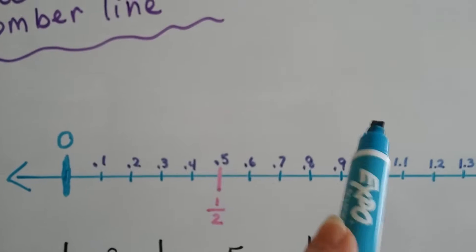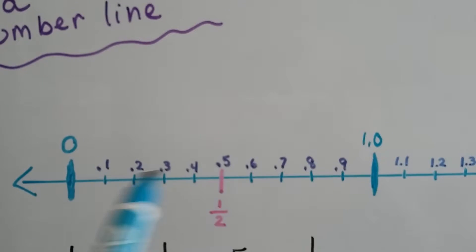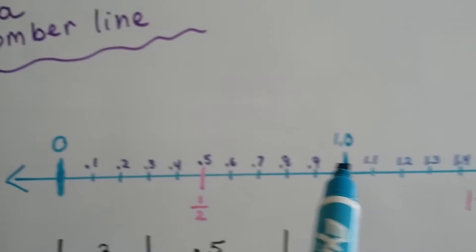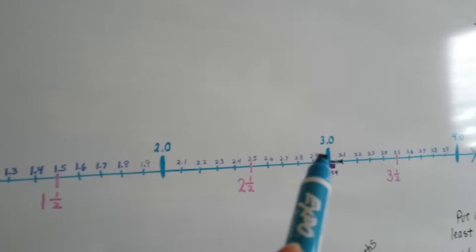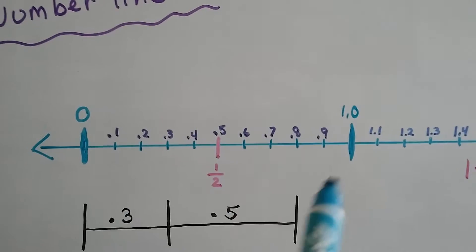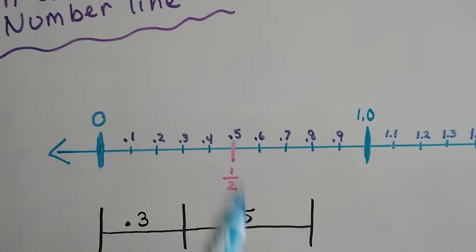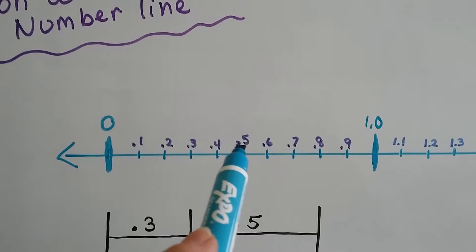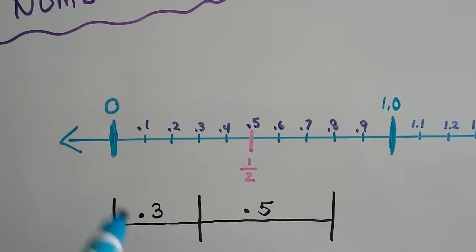This right here is one whole. Going to the next one, that's two. That's three. And then we go to four. In between zero and one are the tenths. Right down the middle is the half — that's .5 or .50. We can put a zero at the back, but it doesn't really matter; we don't have to.